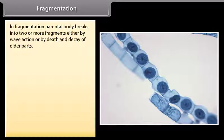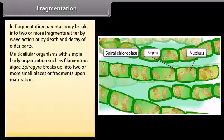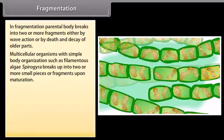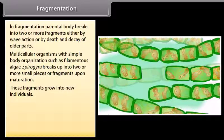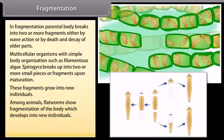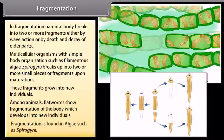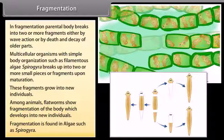Fragmentation: In fragmentation, the parental body breaks into two or more fragments either by wave action or by death or decay of older parts. Multicellular organisms with simple body organizations, such as filamentous algae like Spirogyra, break up into two or more small fragments upon maturation, and these fragments grow into new individuals. Among animals, flatworms show fragmentation of the body, which develops into new individuals. Fragmentation is also found in algae such as Spirogyra.